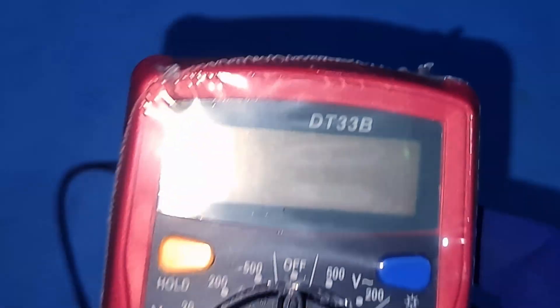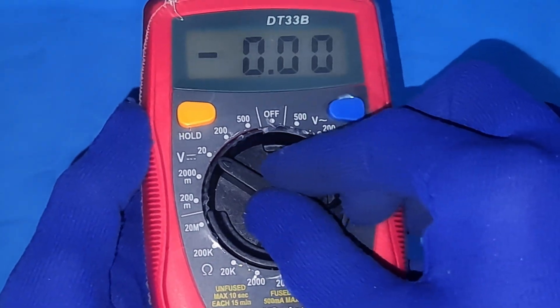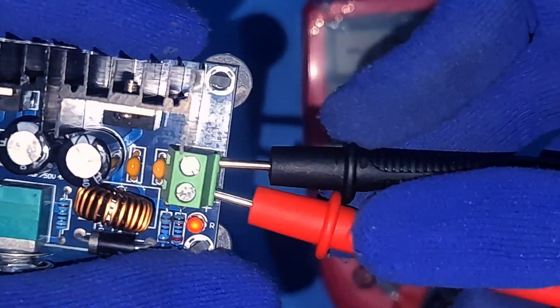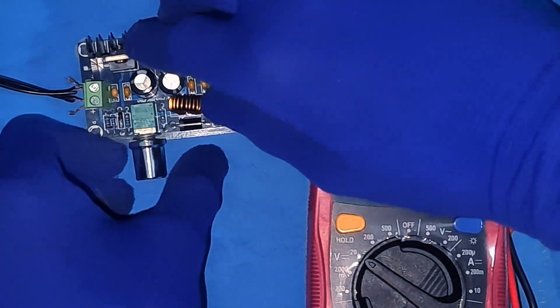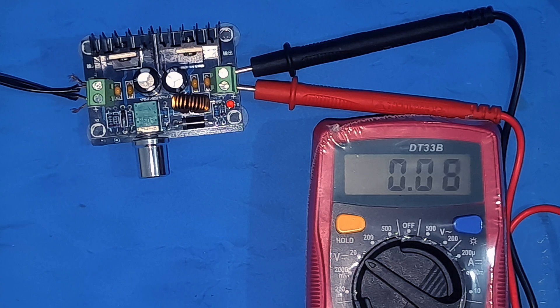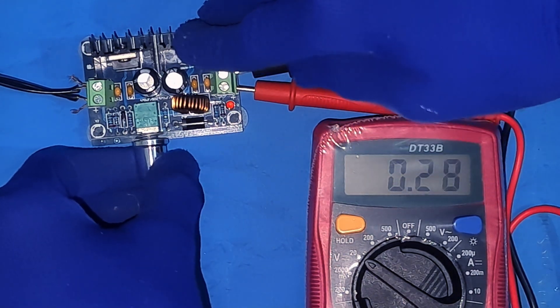Now let's test the output using my multimeter. When the voltage controller is set to its off position, the multimeter shows a small leakage voltage. Now I'll slowly turn the knob to adjust the output voltage.